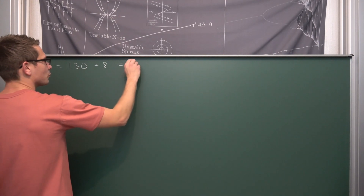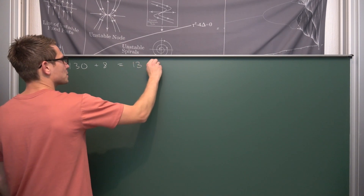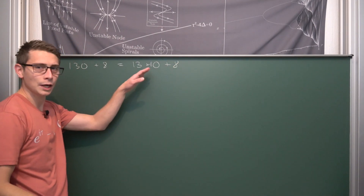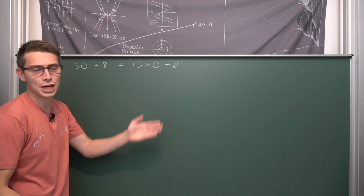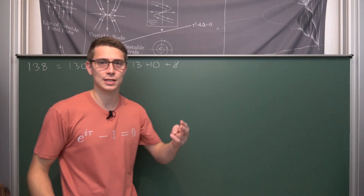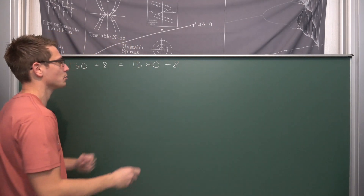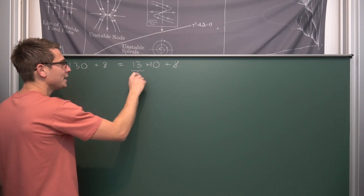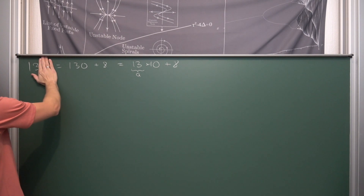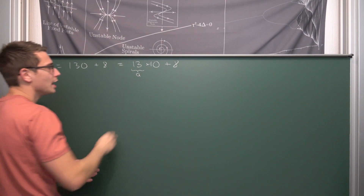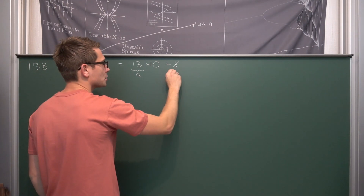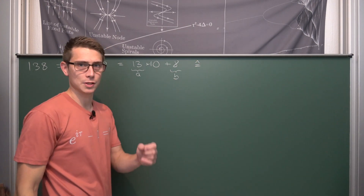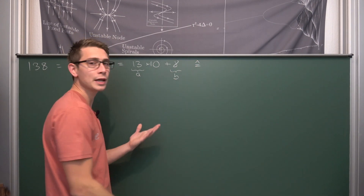Meaning this right here is of the form 13 times 10 plus 8. Now we can generalize this idea. As long as our number has at least two digits we can decompose it like this. Let's call this number in the front A, which is basically just the part without the last digit. And then we also add the last digit to it.